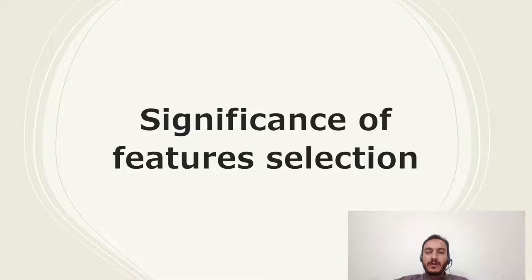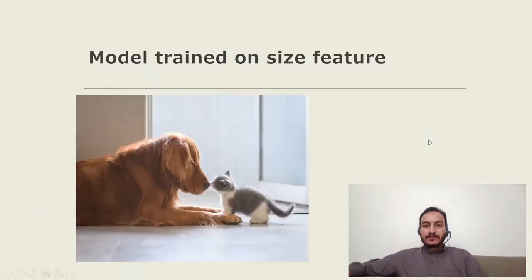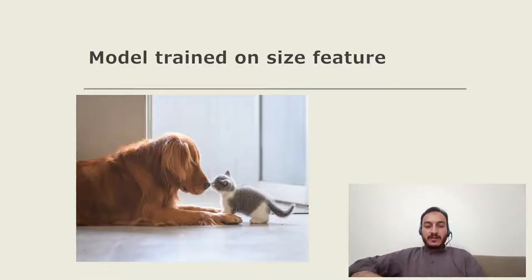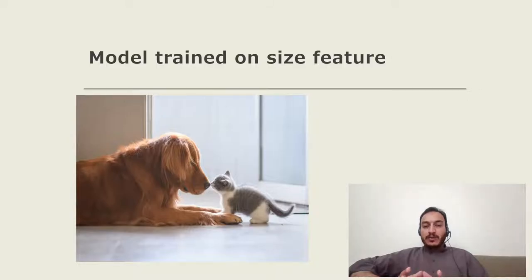Let's discuss this with some examples. Let's say you are a junior data scientist and you are given an image where you can see a big dog and a small cat. As a junior data scientist, you might train your model based on the size feature.